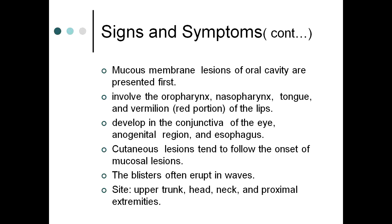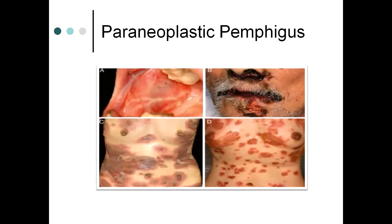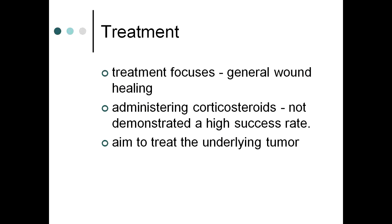Oral cavity lesions present first, involving the oropharynx, nasopharynx, tongue, and vermilion border of the lips; eye mucosa may also be involved. Cutaneous lesions tend to follow mucosal onset. Blisters often erupt in waves; commonly involved sites are the upper trunk, head, neck, and proximal extremities. Images show severe hemorrhagic crusted plaques on the nose and perioral area with painful mucositis.